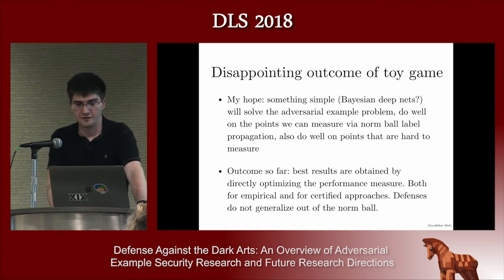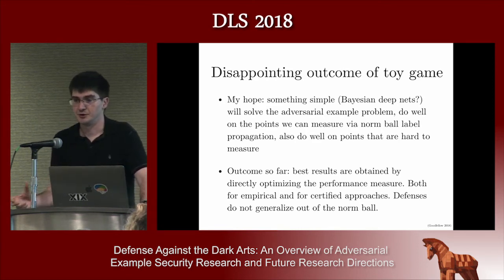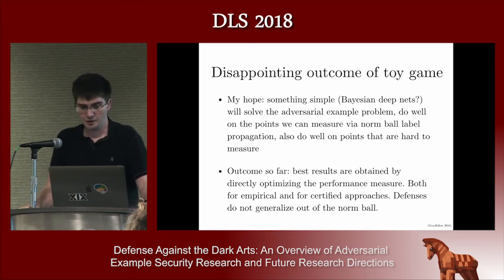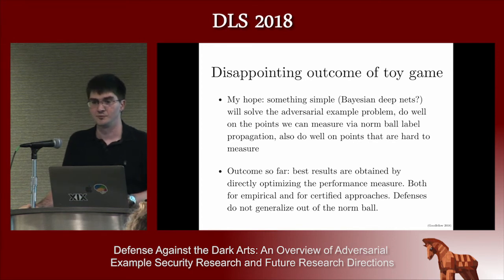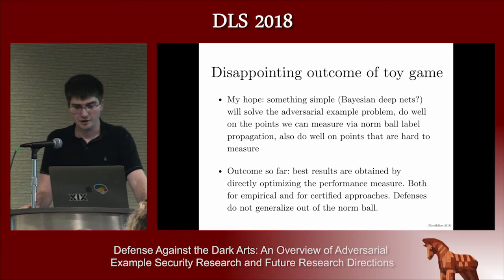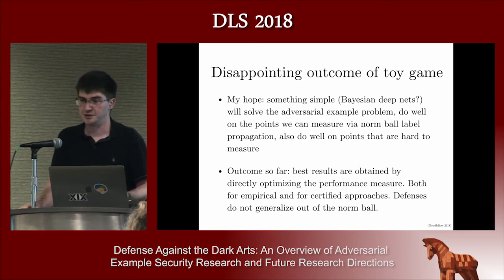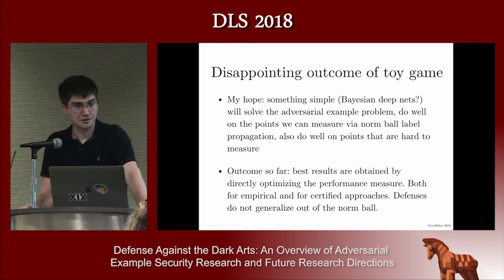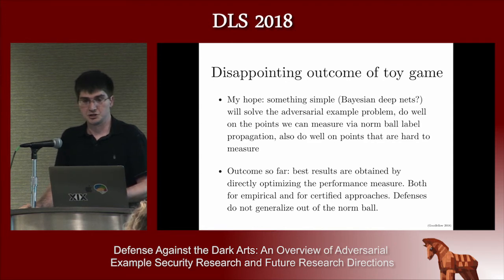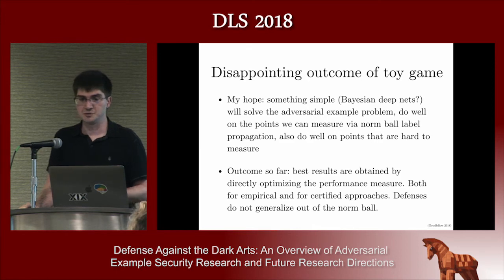Looking back on this five years of progress on the toy game, I have to say I'm a little bit disappointed — and I feel like it's fair for me to say that because I was one of the first people who set up this toy game. My hope was that something really simple would solve the adversarial example problem, and that it would also do well on other benchmarks not designed from that same point of view. I thought of norm balls as an easy way to propagate labels but didn't think of them as the main thing we'd be trying to defend against. What's happened instead is that the best defenses essentially directly train the model to do well on specifically the adversarial examples we're going to benchmark on — and the result is that the defenses don't generalize beyond this one particular threat model.